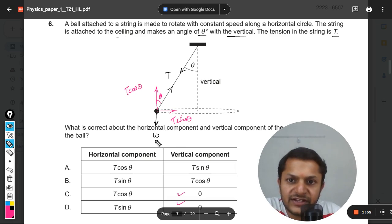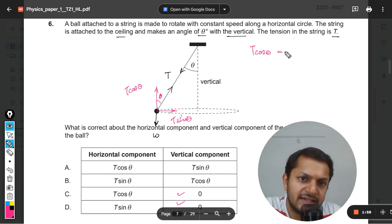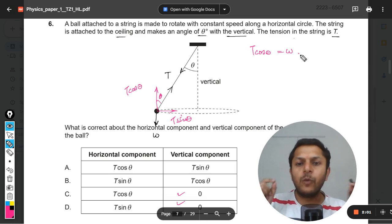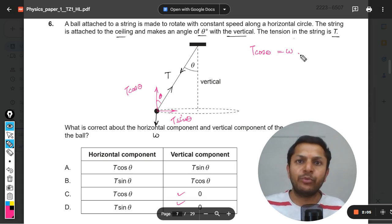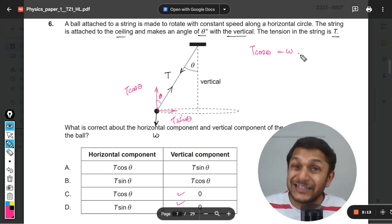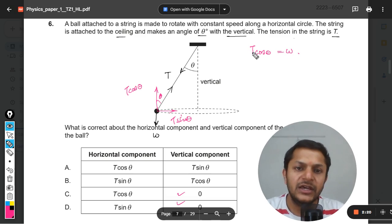What happens is that T cos theta is equal to W. While the ball is moving in the horizontal circle, do you think the ball is going up? No. Do you think the ball is going downwards, toward the ground? Not at all. But weight is acting on it. So why is it not going downwards? Because there is a counter upward force. These two forces are canceling each other. So these two forces cancel each other, so there is no net vertical force.